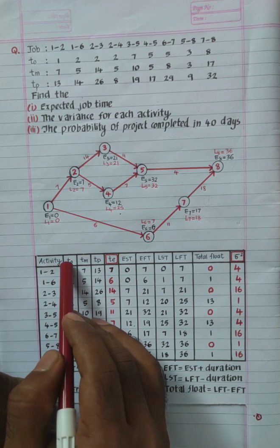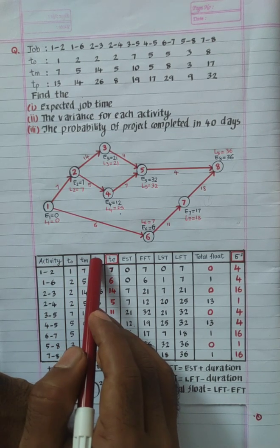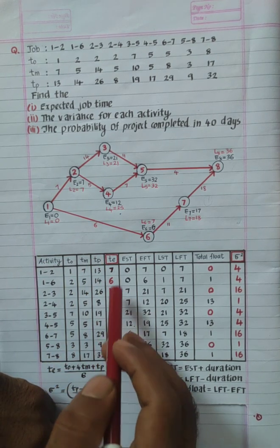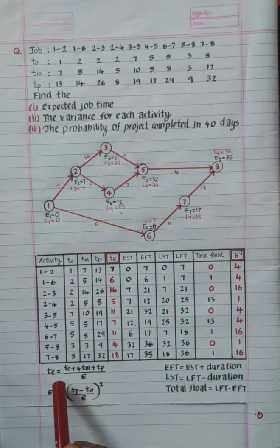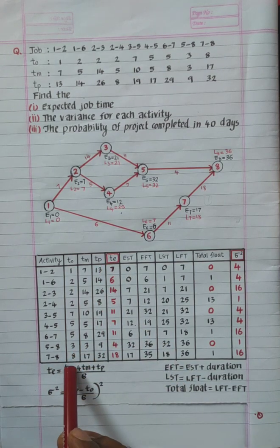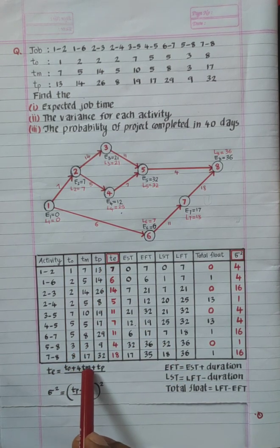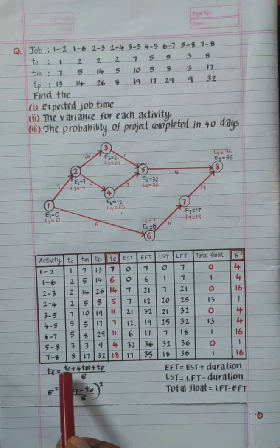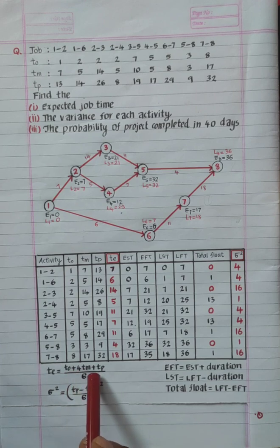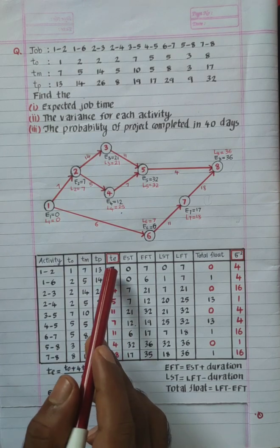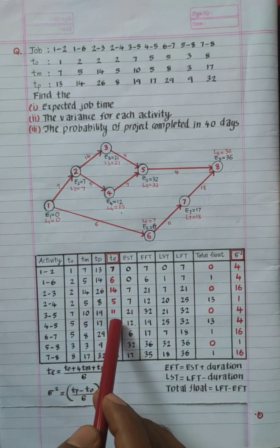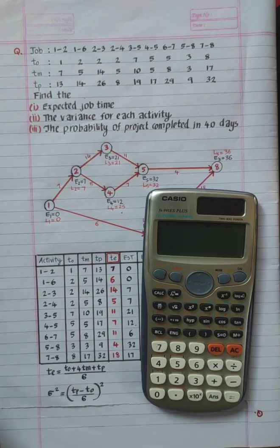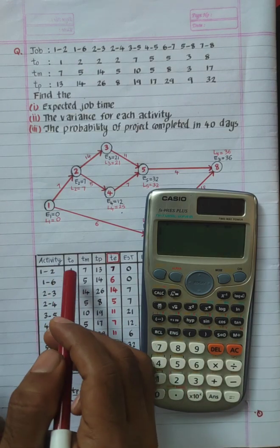In the table, the activity columns are TO (optimistic time), TM (most likely time), and TP (pessimistic time). This is TE. The equation for TE is: TO plus 4TM plus TP, divided by 6. This equation gives us TE.